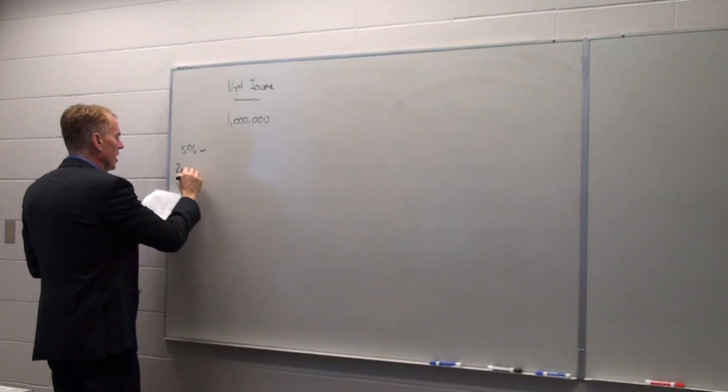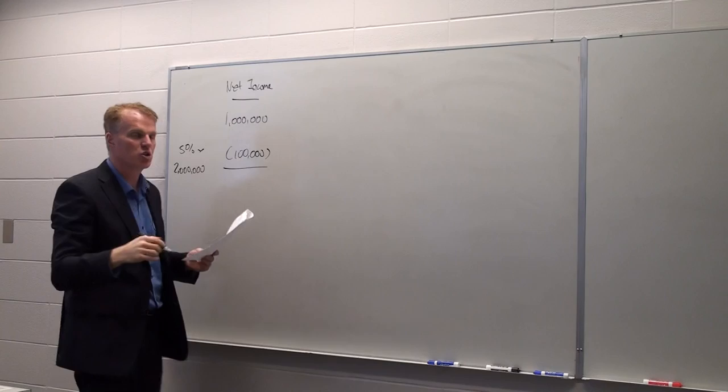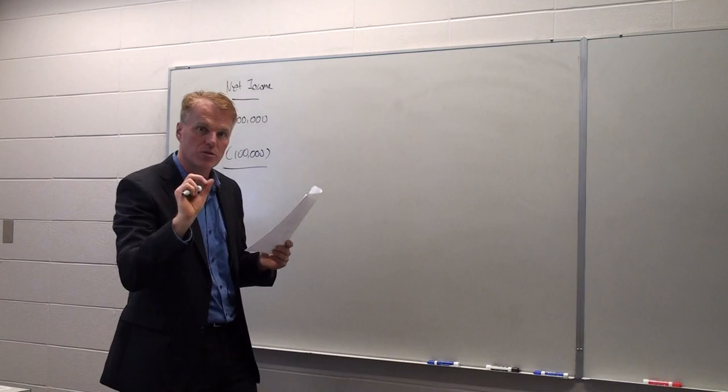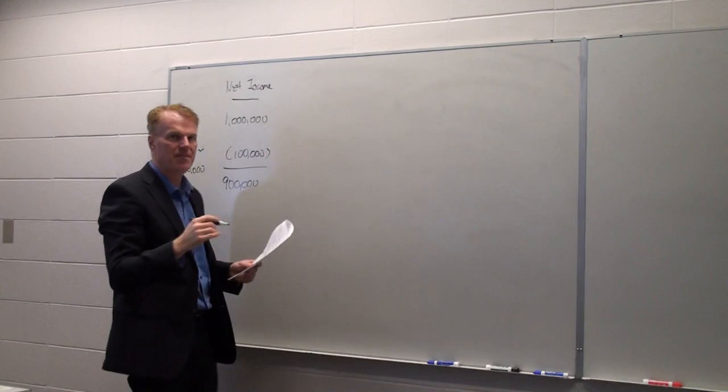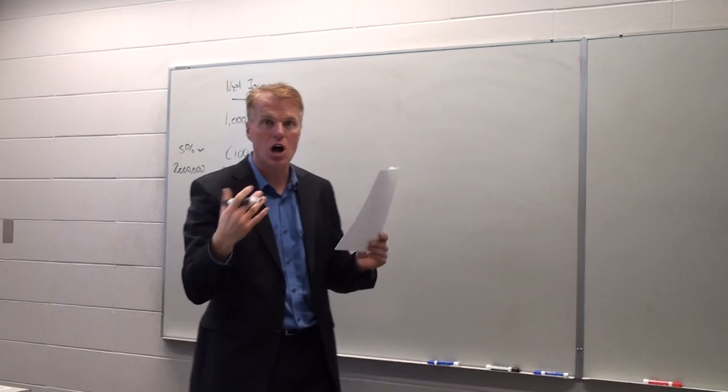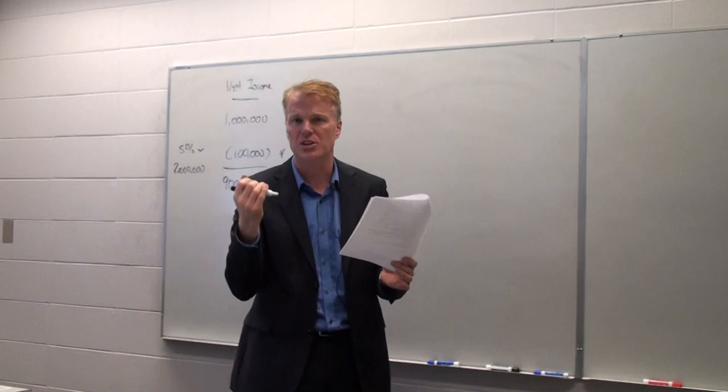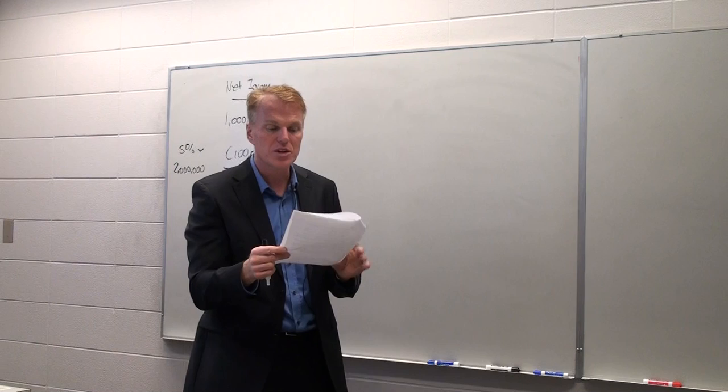So 5% times 2 million means that there's $100,000 attributable dividends to our preferred shareholders. So the amount of income available to our common shareholders is $900,000. This is one of the calculations that students forget to do all the time. They're so focused on the diluted EPS calculations, they miss this one, the easy one.